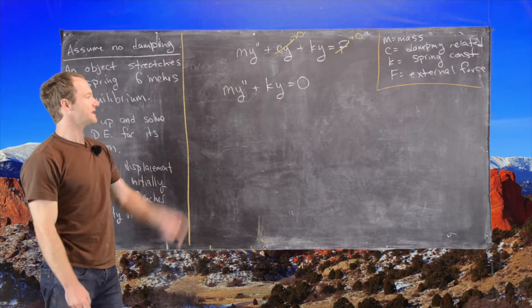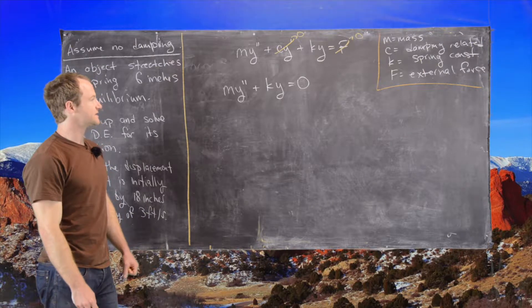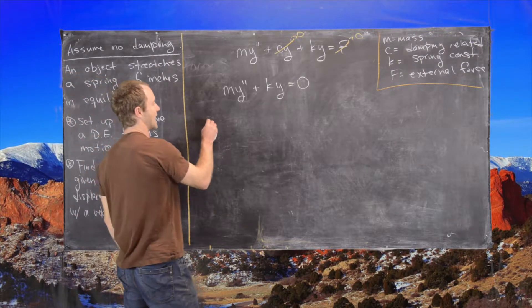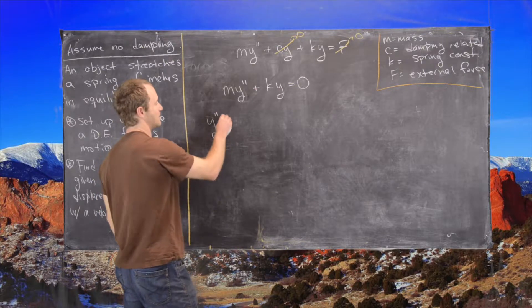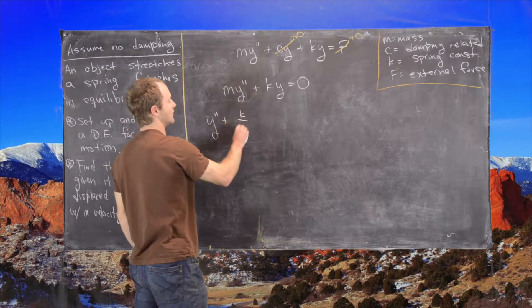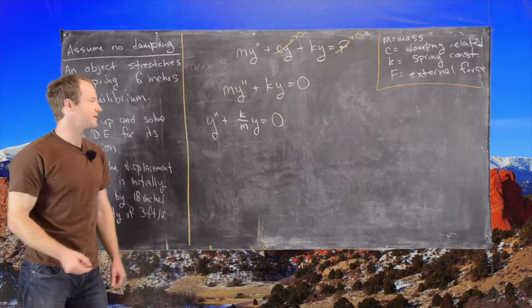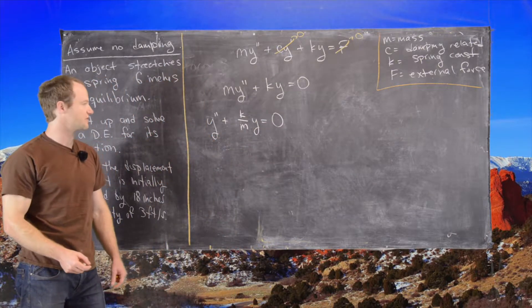And then the next thing that we can do is move this around and maybe make it a bit simpler. So here we have y double prime plus k over m y equals zero. So now we have a pretty simple second order linear differential equation to solve.